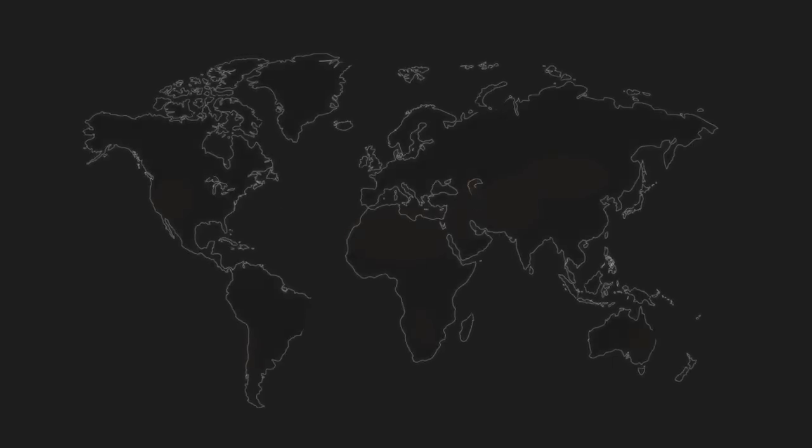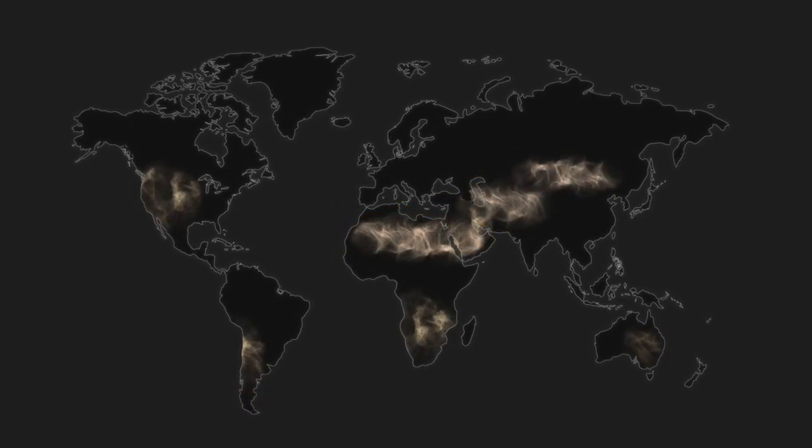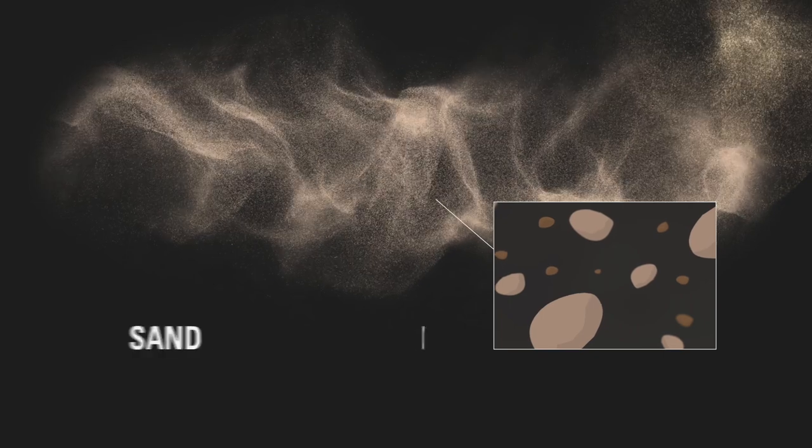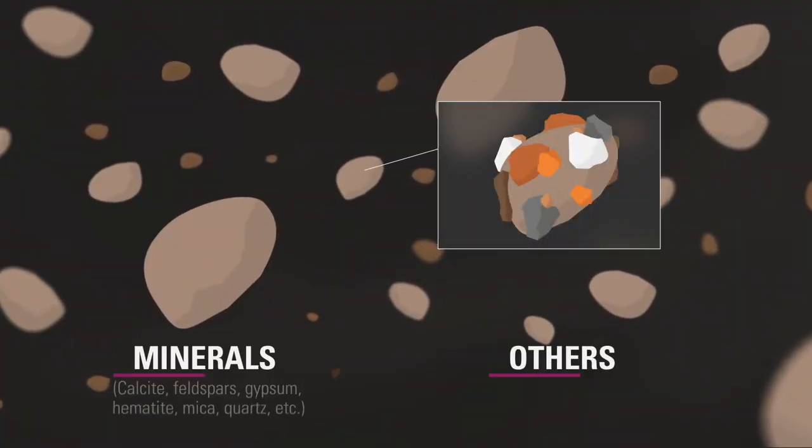Sand and dust storms are caused by strong winds in dry lands. Particles from these storms have a variety of shapes, sizes and chemical compositions.